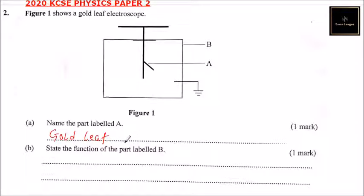Gold leaf is the one that is used to detect whether there are charges on the object that is brought near the top here.